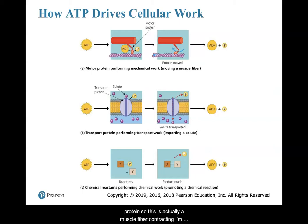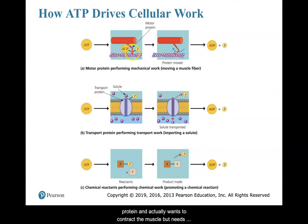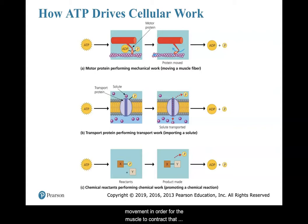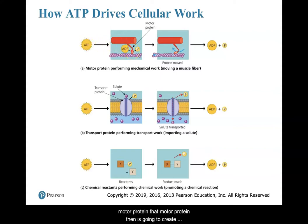Let's look at a motor protein. This is actually a muscle fiber contracting — I'll go over this during the muscular system. There's that red motor protein right here, and it actually wants to contract the muscle, but it needs ATP in order for contraction to occur — really, movement is occurring. Here comes the ATP; it's going to give a phosphate to that motor protein, and that motor protein is then going to create a movement that ends up moving that muscle fiber.